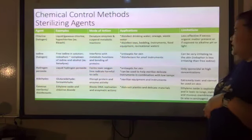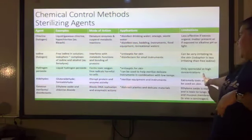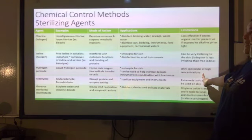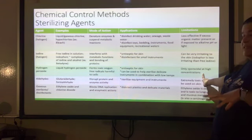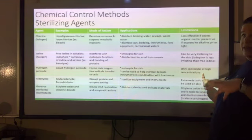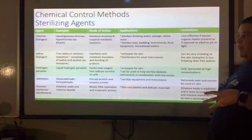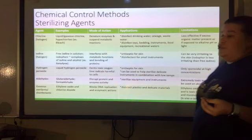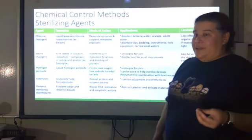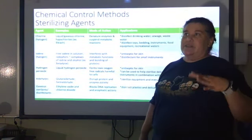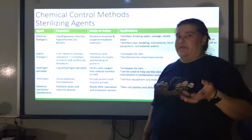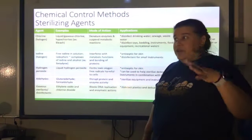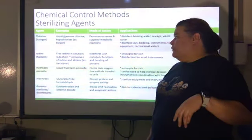The limitation with hydrogen peroxide is that it will only be sporicidal — it will only kill spores — at very high concentrations. And hydrogen peroxide at high concentrations can actually be fairly dangerous, so you have to be careful.